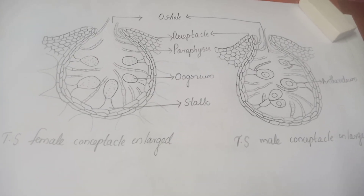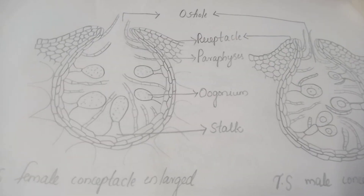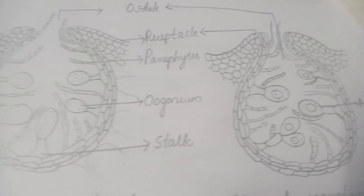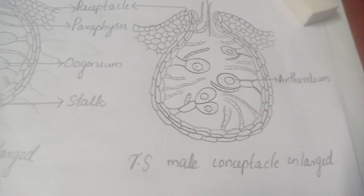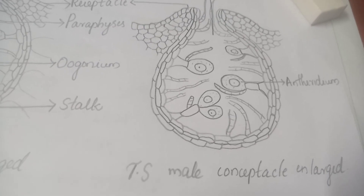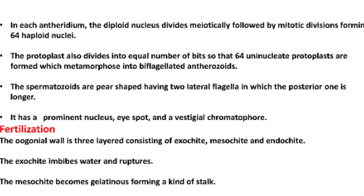Here you can find the TS of male and female conceptacle of Sargassum, which will be helpful for examination. In each antheridium, the diploid nucleus divides meiotically followed by mitotic divisions forming 64 haploid nuclei. The protoplast also divides into an equal number of bits so that 64 uninucleate protoplasts are formed, which metamorphose into biflagellated antherozoids. The spermatozoids are pear-shaped, having two lateral flagella in which the posterior one is longer. Each has a prominent nucleus, eye spot, and a vestigial chromatophore.